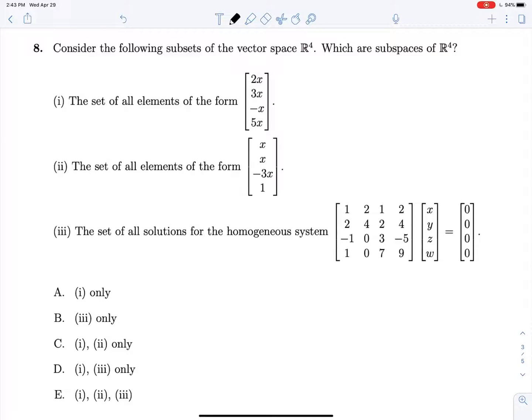Okay, 8. Consider the following subsets of the vector space R4, which are subspaces of R4. So take a look at 2. Does 2 include the zero vector? Well, this position right here can never be zero. So no, this guy does not include the zero vector.